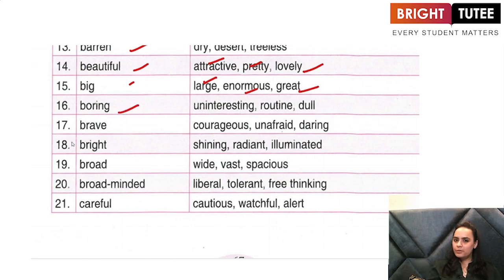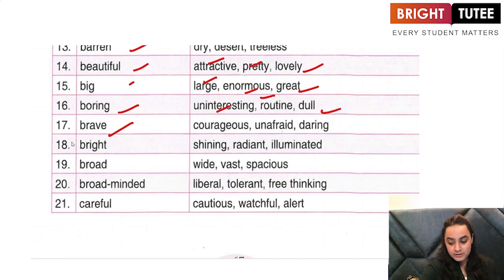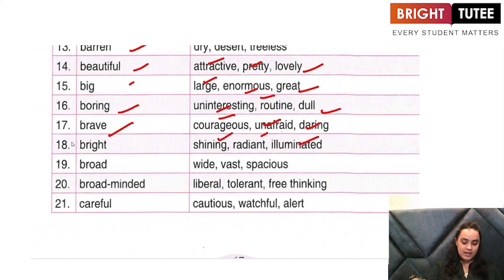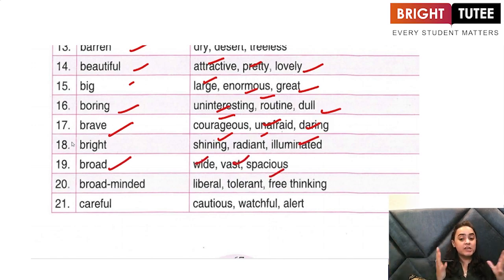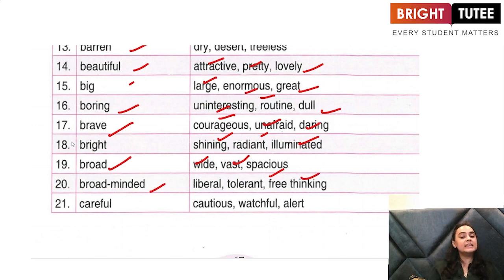'Boring' — the other words that can be used for boring: uninteresting, something which is routine or dull. 'Brave' — the other word for brave: courageous, unafraid, daring. 'Bright' — the other word for bright: shining, radiant, illuminated. 'Broad' — broad means something which is vast, spacious, has more space in it. Broad-minded is used for people who are free in thinking, tolerant, who can bear a lot of things, or liberal.